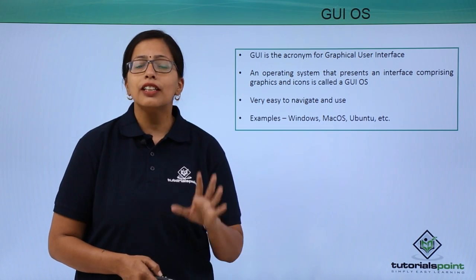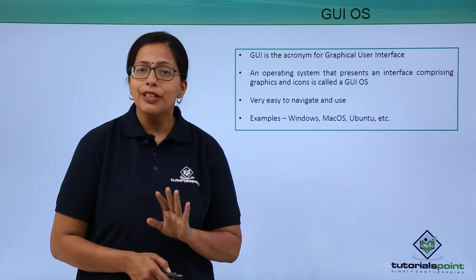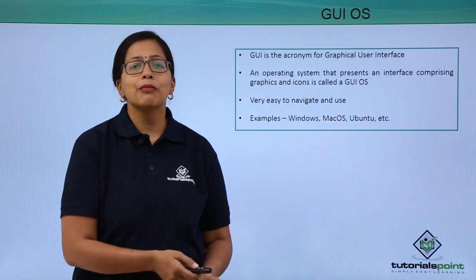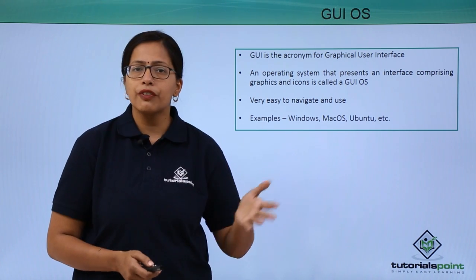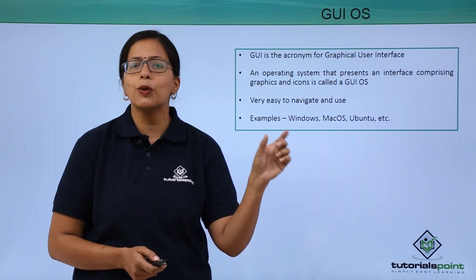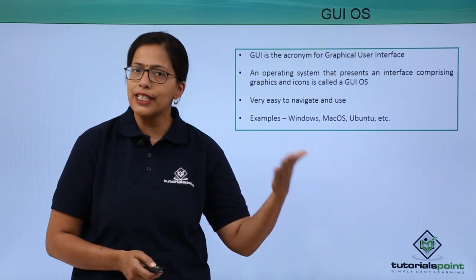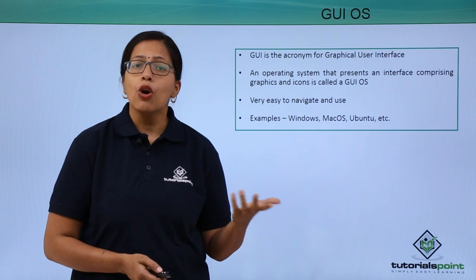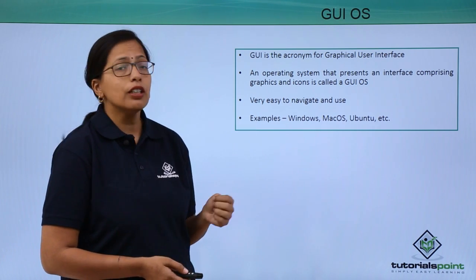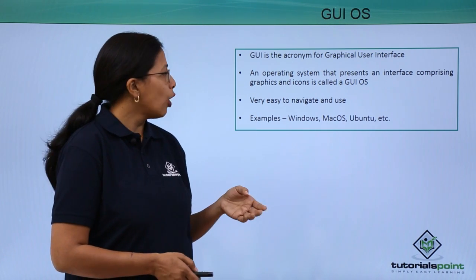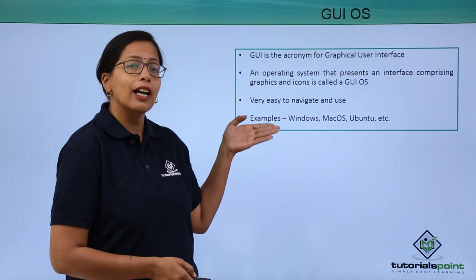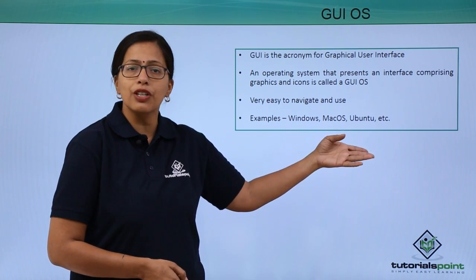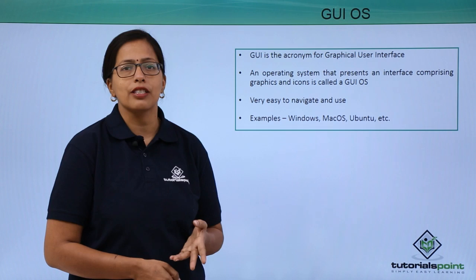What was different about GUI? Users did not have to remember commands to use different parts of the operating system or open different software. Instead, small icons were given which could easily be clicked, and those software or functions would just open up. Examples include Windows, Mac OS, and even Linux — the Ubuntu version is a GUI operating system.